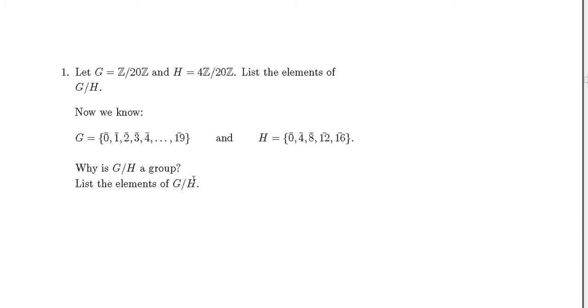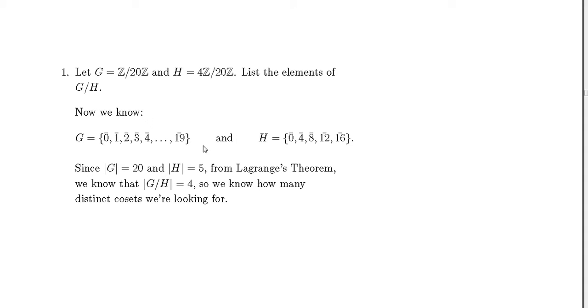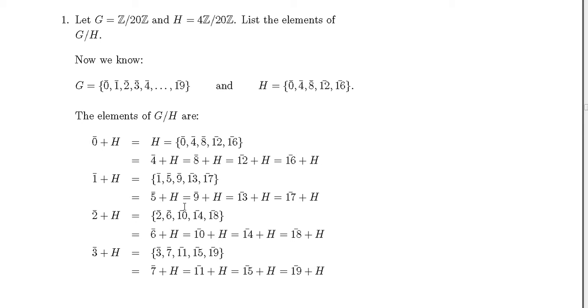We are going to list the elements first. The order of G is 20 and the order of H is 5. So we use Lagrange's theorem, and we know that the division group, if it is a group of course, will have order 4. So we know how many distinct cosets we are looking for.